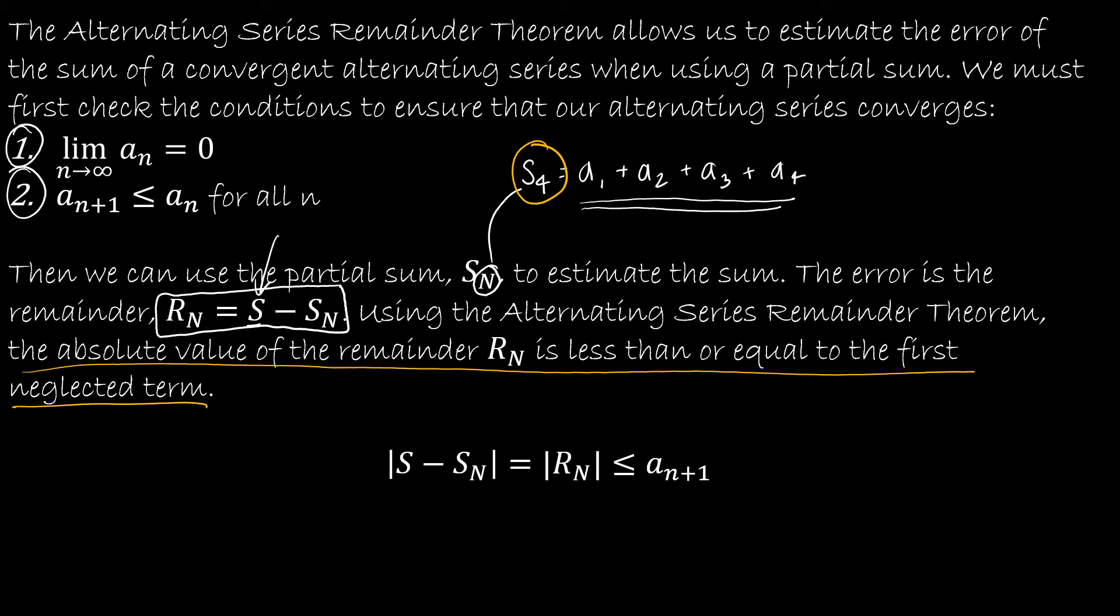So let's say I was using the partial sum with the first four terms. So this would say that S minus S4 is equal to the absolute value of R4 and that has to be less than or equal to the first thing that I didn't use. So I used A1, A2, A3, and A4 so this would be A5. Again this will make a lot more sense once we do it but I wanted to give you an idea of where we're headed here.